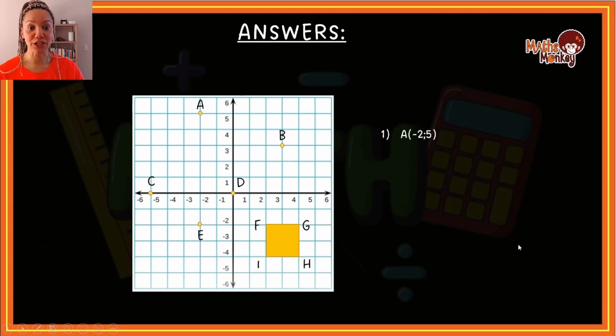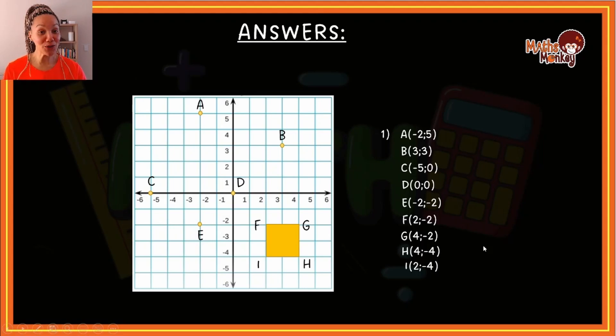All right. So let's have a look. A is (-2, 5). B is (3, 3). C is (-5, 0). So the -5 had to be first and the 0 second. Then D is the origin, which is (0, 0). E is (-2, -2). F is (2, -2). G is (4, -2). H is (4, -4). And then I is (2, -4). So hopefully you got all of those correct.